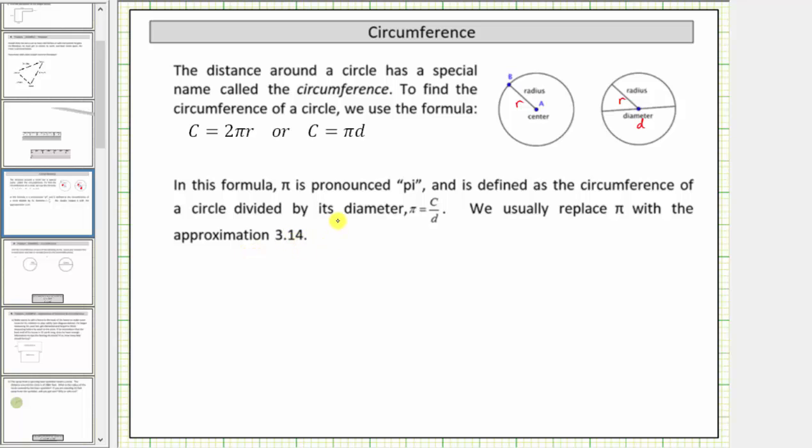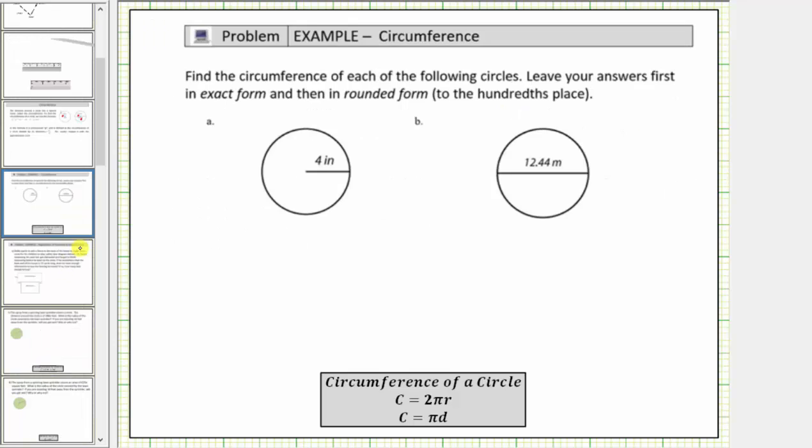Let's look at two examples. We're asked to find the circumference of each of the following circles, leave the answer first in exact form, meaning leave the π in the circumference, and then in rounded form to the hundredths place value, which means two decimal places.